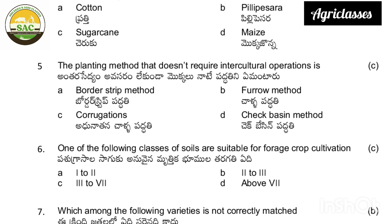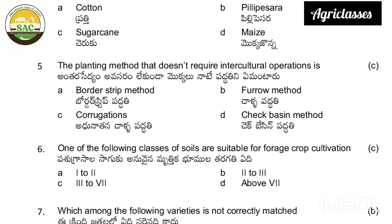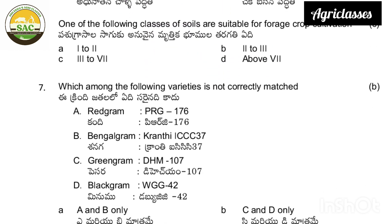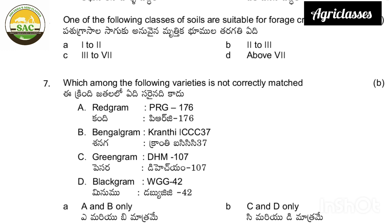Next question: the planting method that does not require intercultural operations is — border strip, furrow method, corrugations, check basins. The correct answer is corrugations. Then: one of the following classes of soils is suitable for forage cultivation — 1, 2, 2-3, 3-7, or above 7.